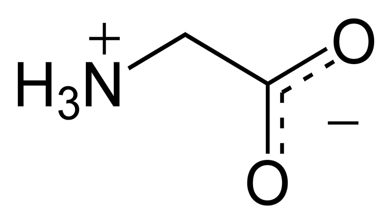Glycine, symbol Gly or G, is the amino acid that has a single hydrogen atom as its side chain. It is the simplest possible amino acid. The chemical formula of glycine is NH2CH2COOH.